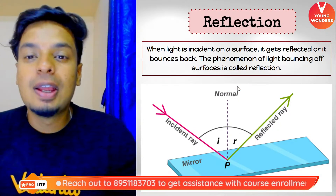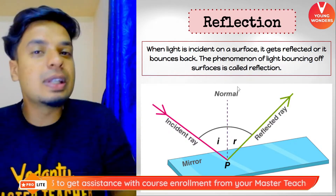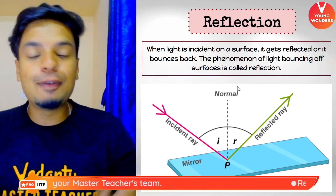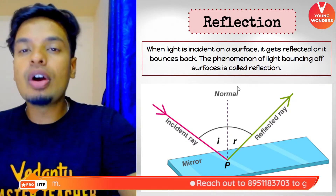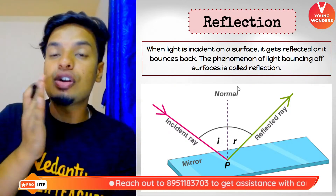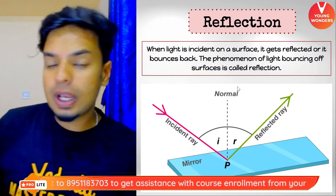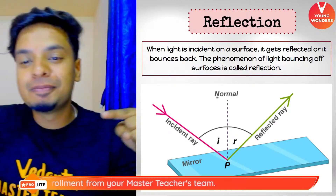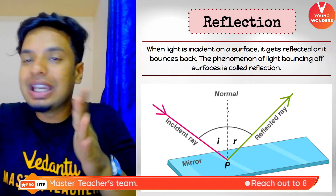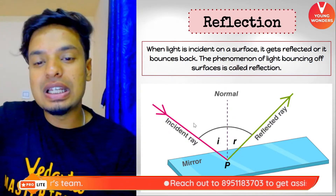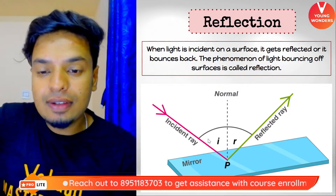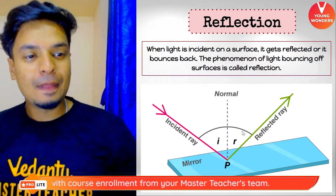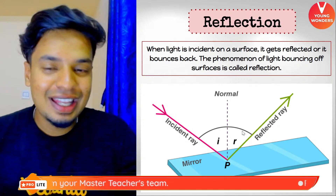Reflection — when light is incident on a surface, it gets reflected or bounces back. This phenomenon of bouncing back of light from the surface is called reflection. There is also a definition where the change of direction of light is because of reflection. Now look at this image: the pink line indicates the incident ray — the light falling on the mirror. Then you have the normal, which is perpendicular to the mirror at 90 degrees. The angle between the incident ray and the normal is the angle of incidence; the angle between the reflected ray and the normal is the angle of reflection.